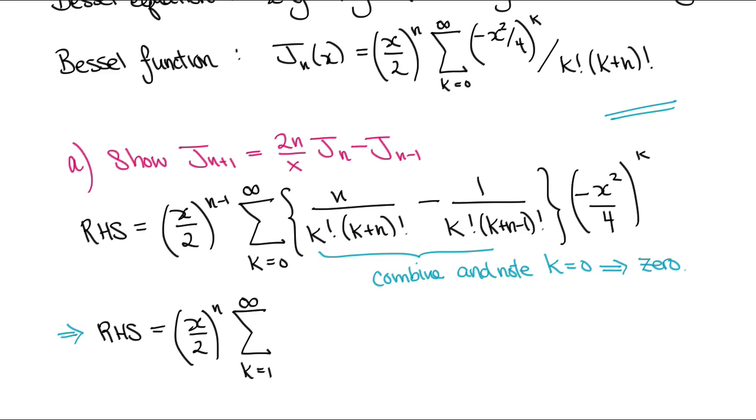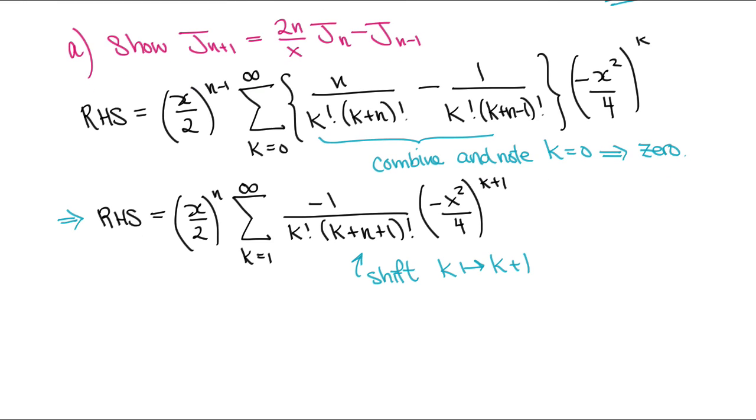We're going to shift now k to k plus 1 in order for the powers of x to go up in powers of k, rather than k plus 1. This gives the new right-hand side, which is recognized as the Bessel function of n plus 1.